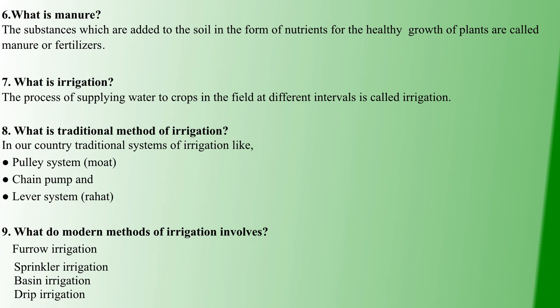Modern irrigation methods include Furrow irrigation, Sprinkler irrigation, Basin irrigation, and Drip irrigation. Now we use these 4 types of irrigation for the crops.